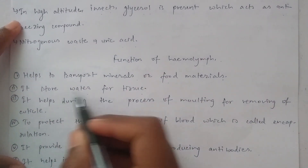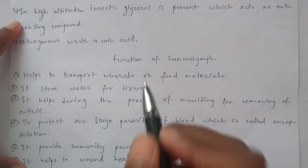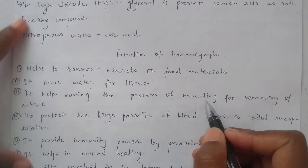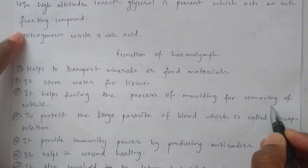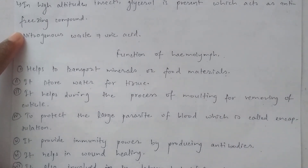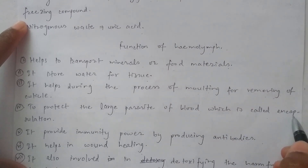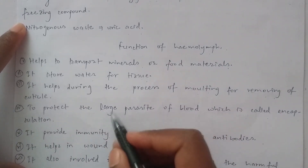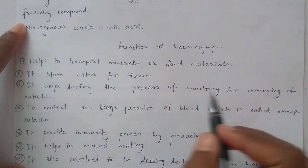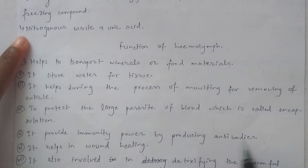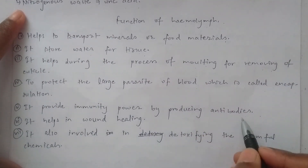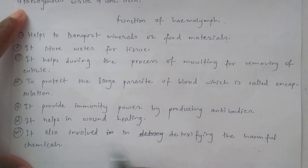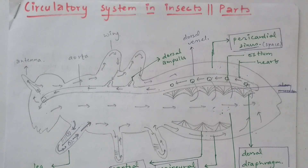Hemolymph helps to transport minerals and food particles. It also helps during the process of molting for removal of the cuticle. It protects the body through processes such as encapsulation, and it provides immunity by producing antibodies. It is also involved in detoxifying harmful chemicals.